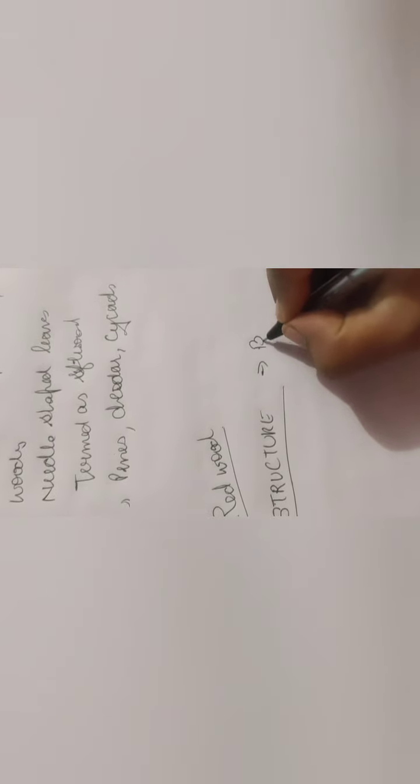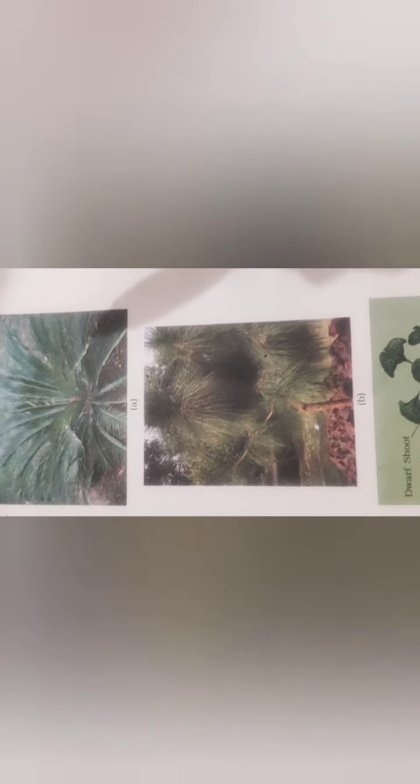Let us talk about the structure of gymnosperms. The stem of gymnosperms can be branched or unbranched. An example of a plant with a branched stem is pine. An example of a plant with an unbranched stem is cycas. In cycas we see unbranched stems, while in pine we see branched stems.